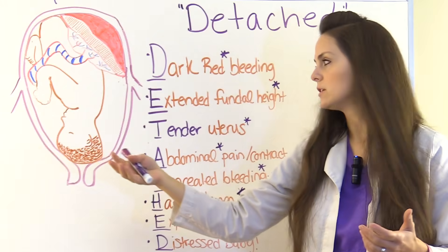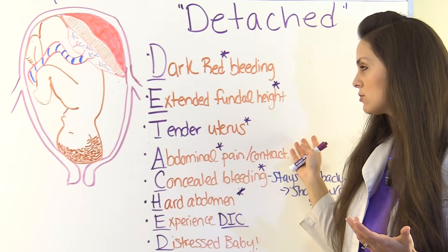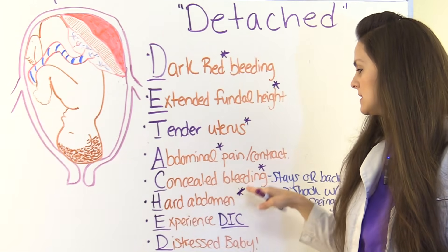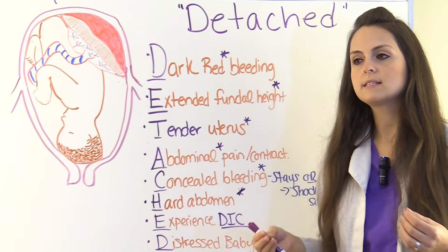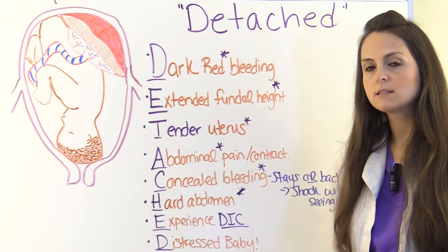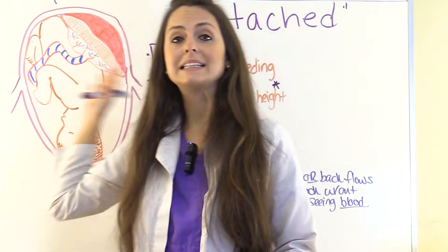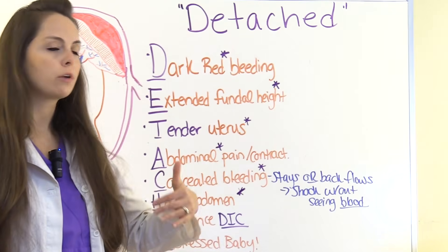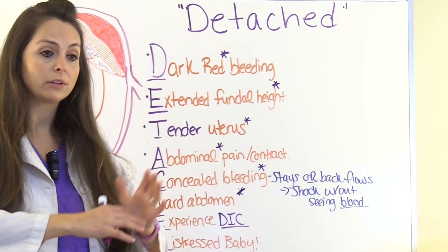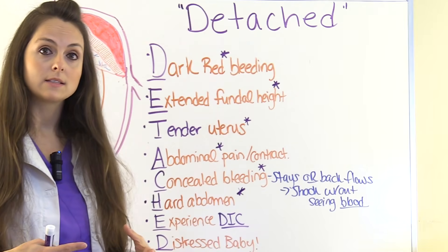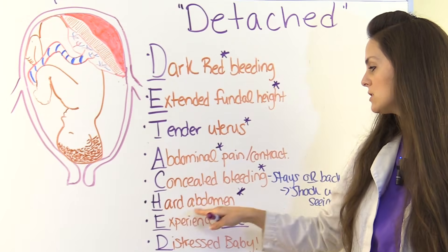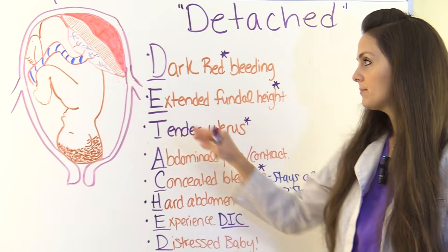A stands for abdominal pain or contractions, which occurs with abruptio placenta but usually not with placenta previa. C stands for concealed bleeding — a lot of times it will be concealed, though sometimes it can be visible. With placenta previa it's usually always visible. As blood collects in the uterus it can back-flow into the fallopian tubes, and the patient can enter into shock without any obvious visible blood loss.